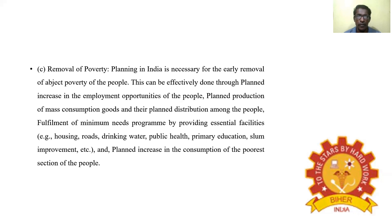Removal of Poverty: Planning in India is necessary for the early removal of abject poverty. This can be effectively done through planned increase in employment opportunities, planned production of mass consumption goods and their planned distribution among the people, and fulfillment of minimum needs programs by providing essential facilities such as housing, roads, drinking water, public health, primary education, slum improvement, and planned increase in consumption for the poorest sections of the people.